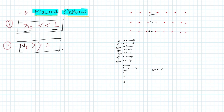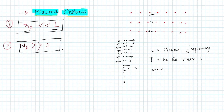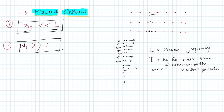If omega is the plasma frequency and tau is the mean time of collision with neutral particles, then omega times tau must be greater than one.